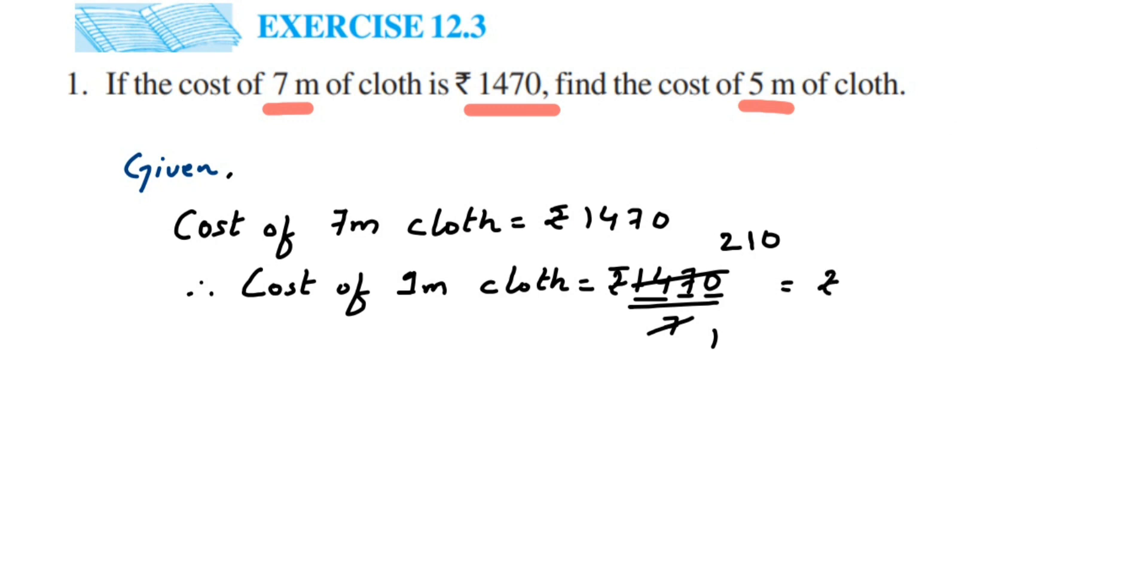This is for 1 meter. Now we have to find the cost of 5 meters. For 1 meter it is 210, so for 5 meters it will be 5 times 210. Therefore,